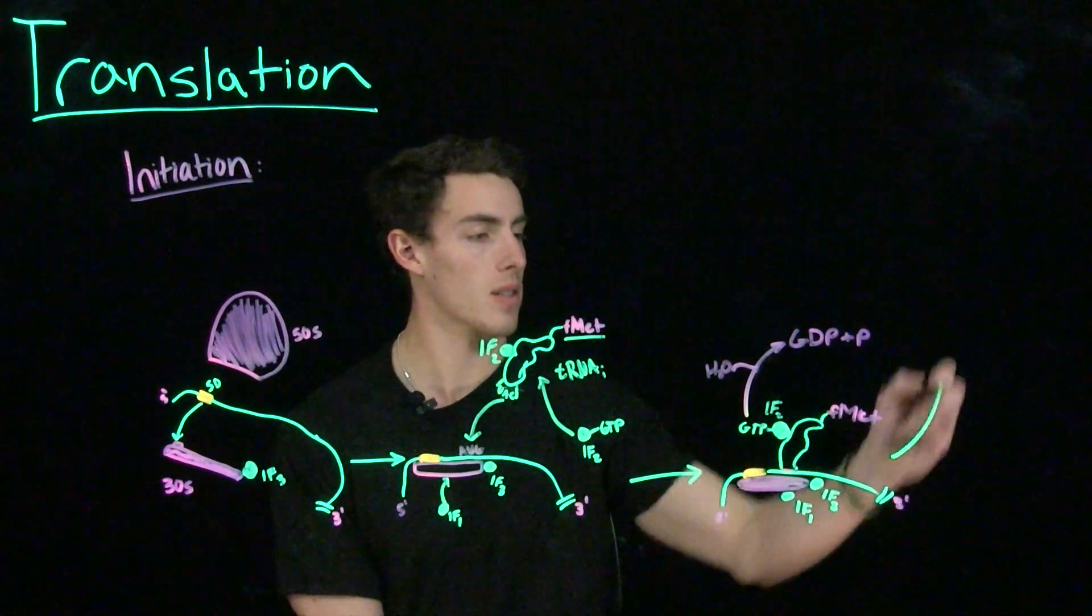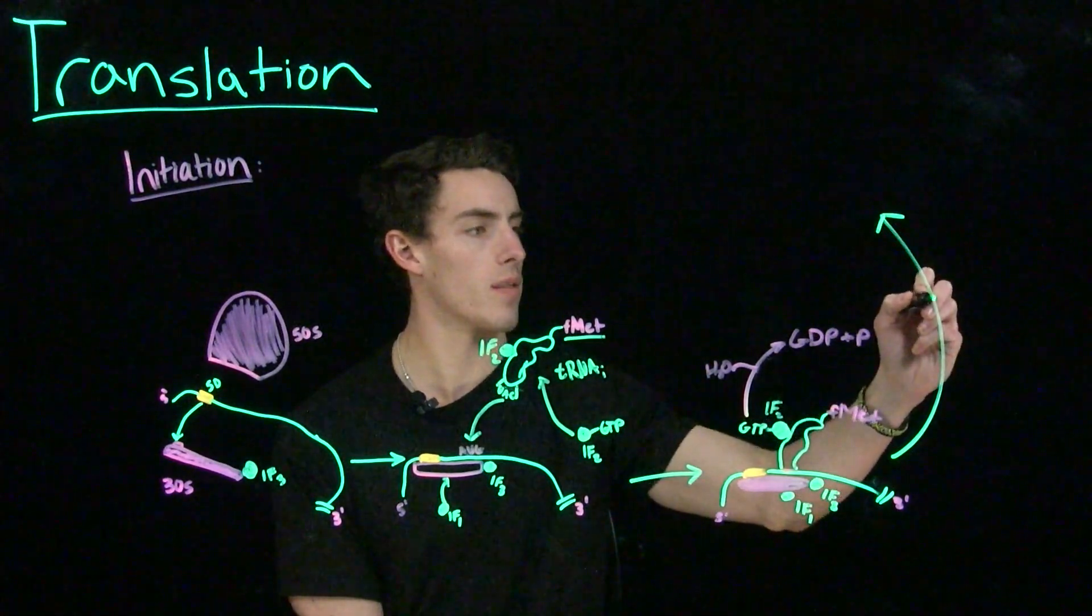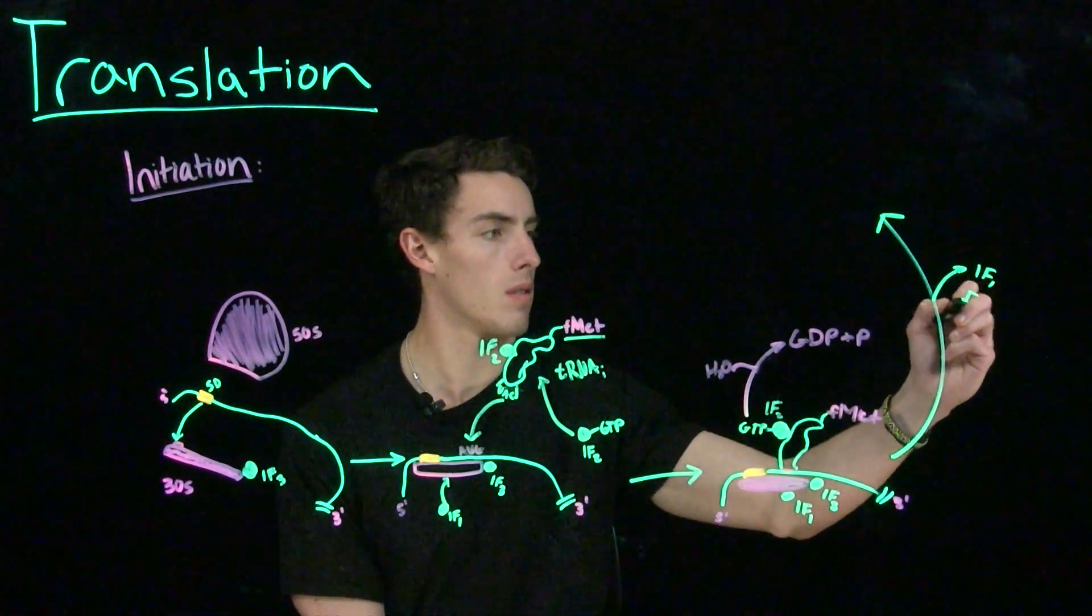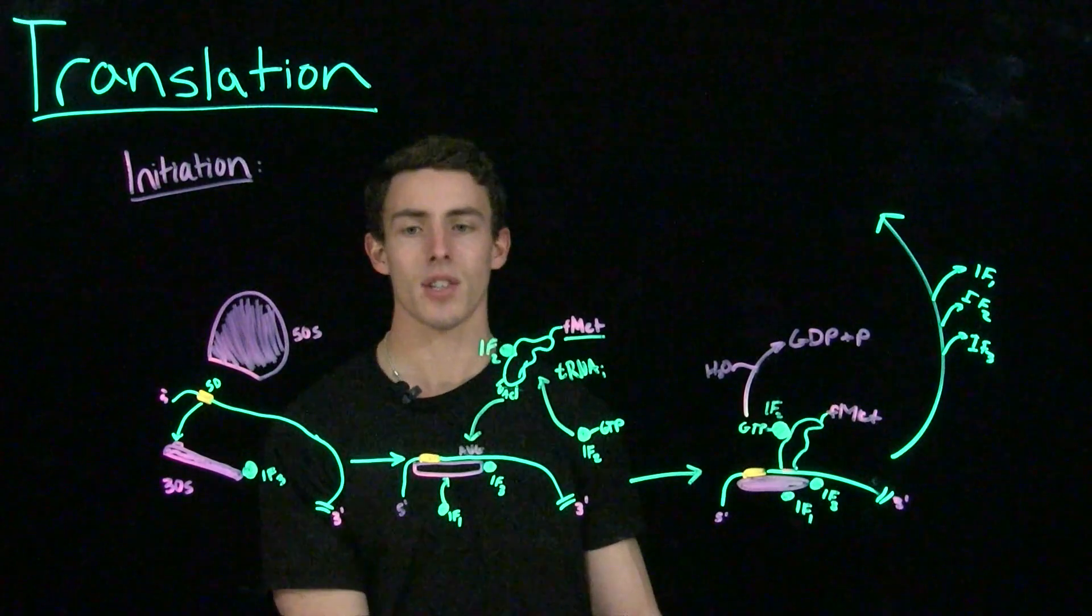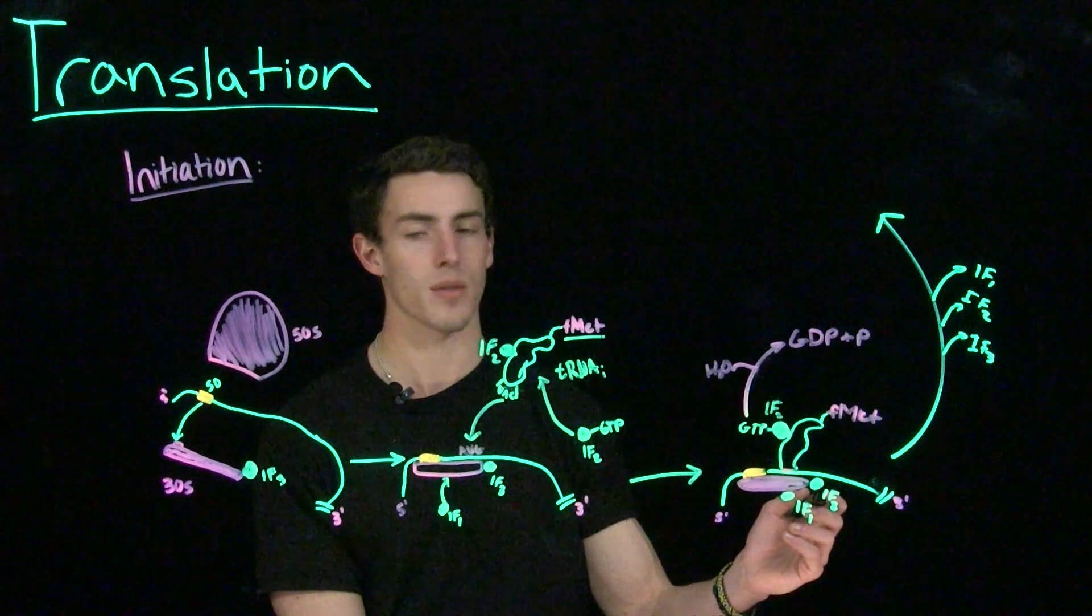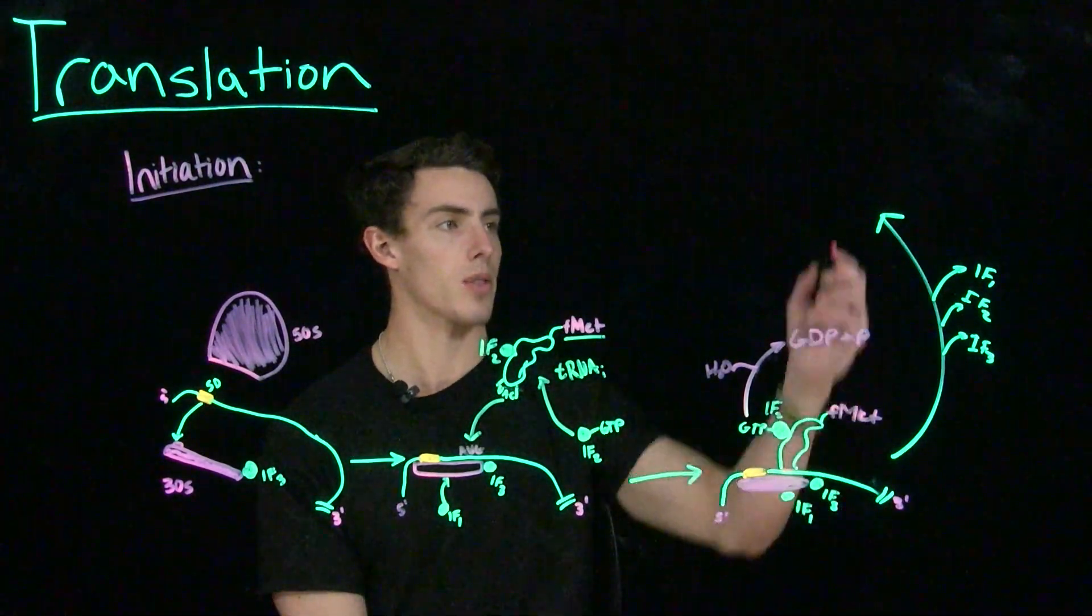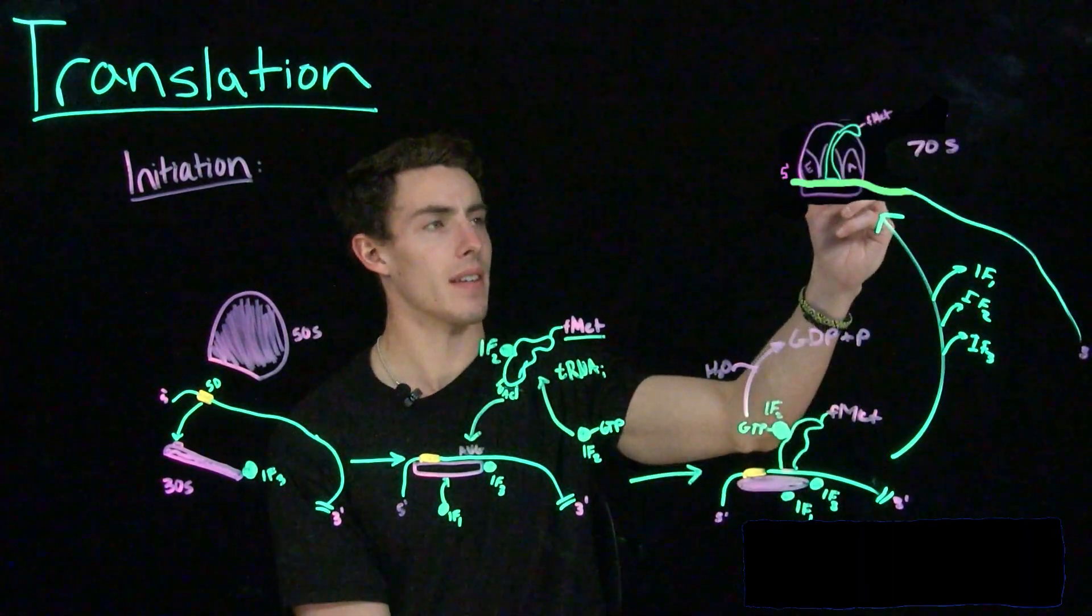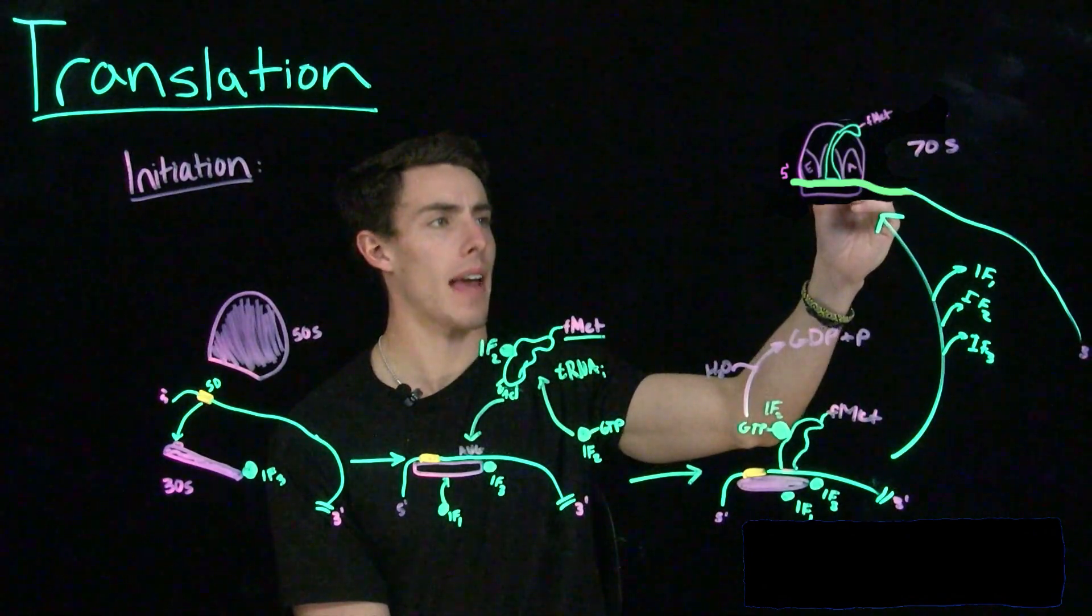And with the hydrolysis of GTP, the initiation factors are all going to leave. And when the initiation factors leave, that means that the small and large subunits of the ribosome can come together to form the 70S ribosomal complex, which will now contain the initiator tRNA in the P site.